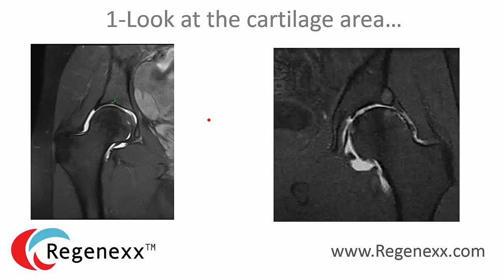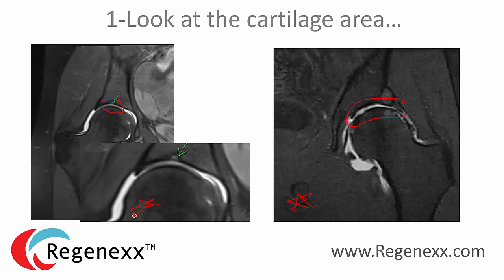This particular patient has less cartilage — less gray stuff — in this area, and this patient has no gray stuff at all. So this patient over here has severe arthritis, and this patient over here has more moderate arthritis. If we blow that up, you can see that in this particular area there's less gray stuff, meaning less cartilage.